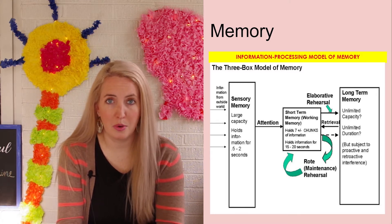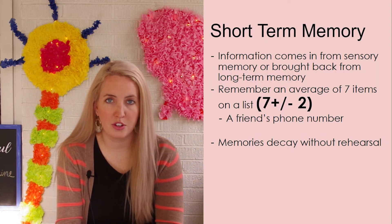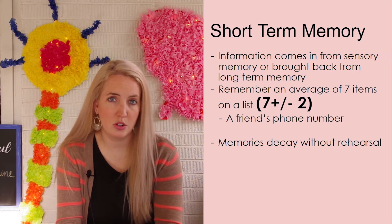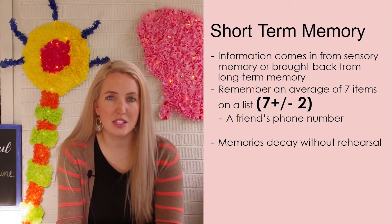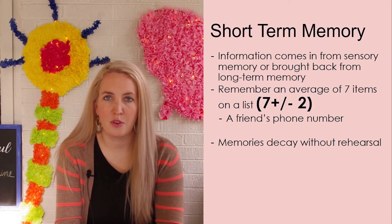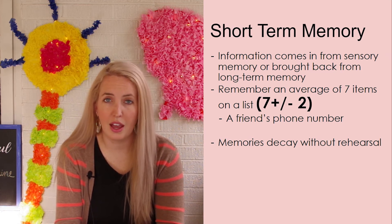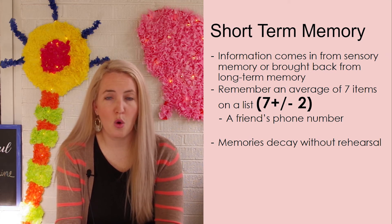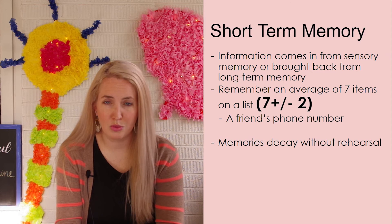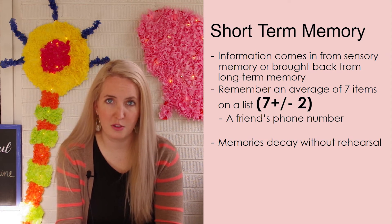Short-term or working memory is what we call this second area of our memory structure. Inside of our short-term memory, we can hold an average of seven items. In psychology, we often refer to this as the seven plus or minus two, because it varies from individual to individual — somewhere between five and nine items of information we can hold at any point in time. Think about it as if a friend were to give you their phone number but you don't have time to write it down. What's the only thing you can do? We often have to repeat it over and over again, and without rehearsal, eventually those numbers are going to fade from our memory and be forgotten.